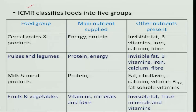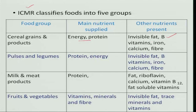There is another food group system — the five food group system given by the ICMR. The first group is cereals and grains, which supply energy and protein, along with invisible fat, B complex vitamins, iron, calcium, and fiber. The second group is pulses and legumes, which primarily provide protein and energy — protein being the main nutrient — along with invisible fat, vitamins, iron, calcium, and fiber.